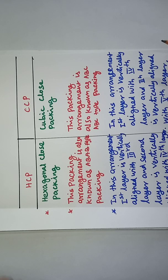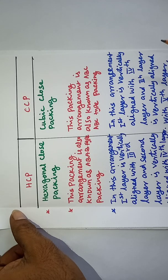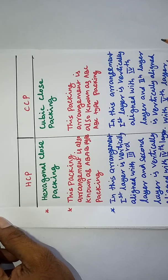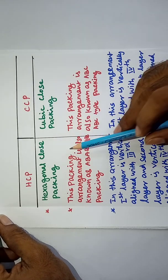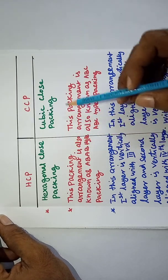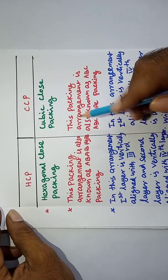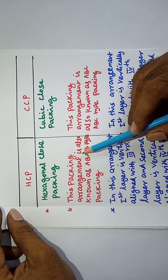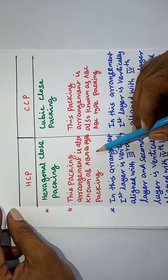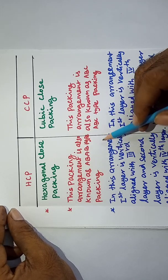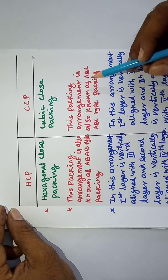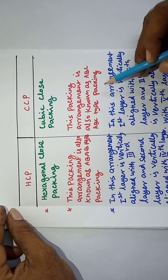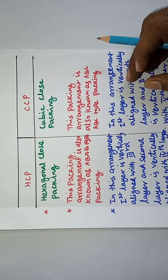Good morning students. Today we are going to discuss the difference between HCP and CCP — Hexagonal Closed Packing and Cubic Closed Packing. Hexagonal Closed Packing is also known as ABAB type packing, and Cubic Closed Packing is also known as ABC type closed packing.